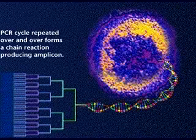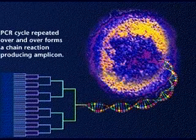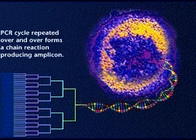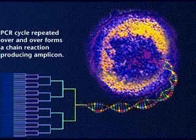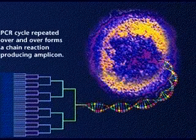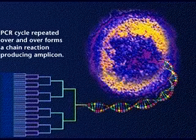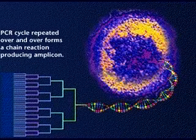In order to generate enough target DNA for detection, the PCR cycle is repeated over and over. Since every synthesized DNA sequence from one PCR cycle becomes a template for the next PCR cycle, there is a chain reaction which results in exponential growth of the target DNA population.